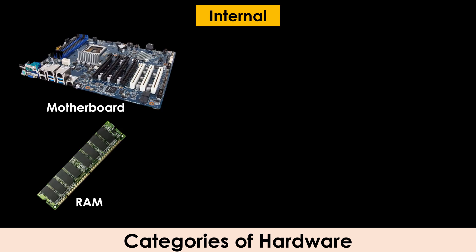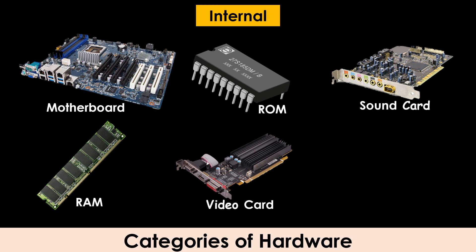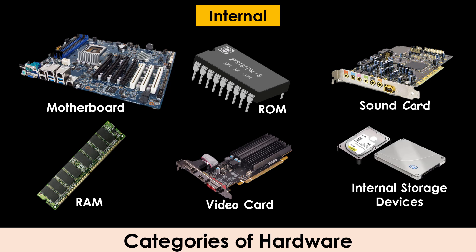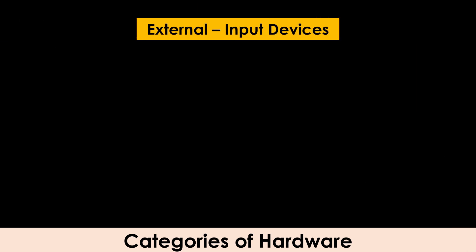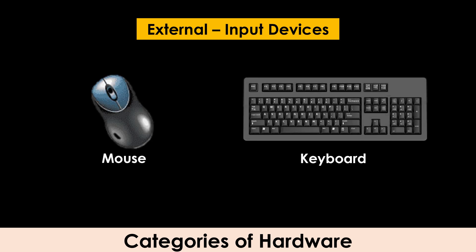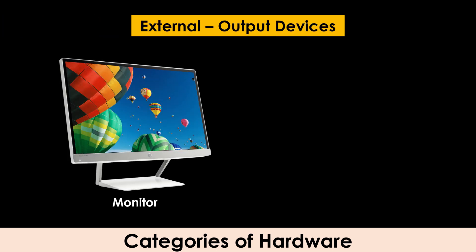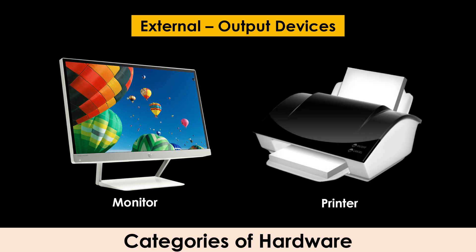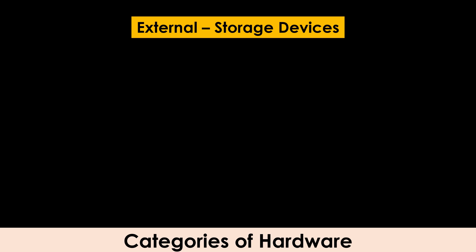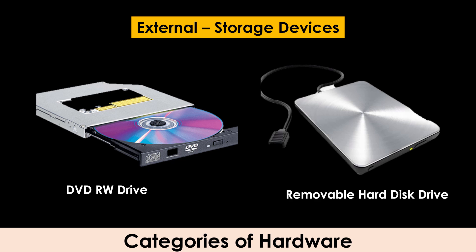Hardware falls into two categories: internal and external. The internal hardware devices include the motherboard, random access memory, read-only memory, video card, sound card, and internal storage devices such as hard disk drive and solid state drive. The external hardware devices include input devices such as the mouse and keyboard, output devices such as the monitor and printer, and external storage devices such as DVD writable drive and removable hard disk drive.